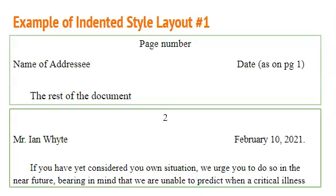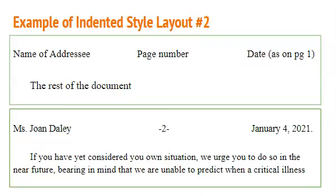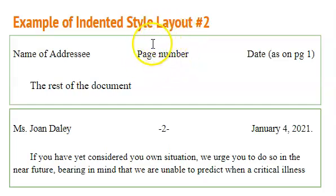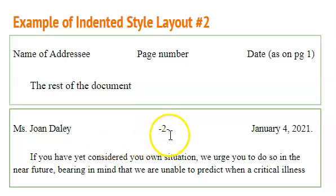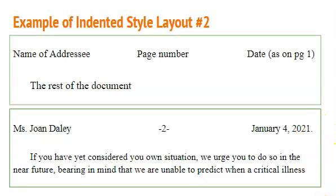The second example changes the page numbering. It is now in the same line as the name of the addressee and the date — so it's now centered. Before, the page number was at the top with a double space, then the information. Now it's all in the same line: Miss Joan Daily to the left, page two in the center, and to the right the date January 4, 2021. Then a triple space and the rest of the document, with the paragraph indented.